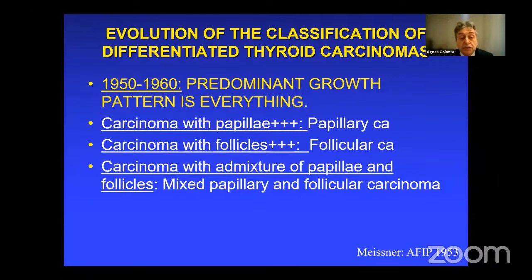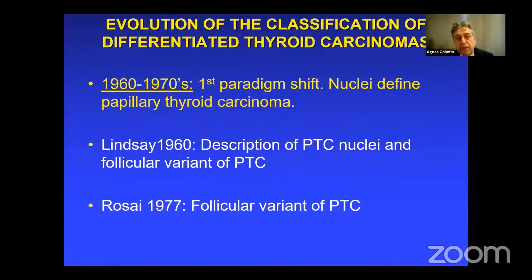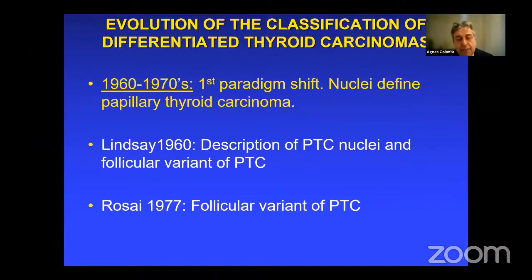A big change happened in the 1960s and 70s. A pathologist from California, Dr. Stuart Lindsay, in 1960 described the papillary carcinoma nuclei. He realized that nuclear characteristics — clearing, overlapping, irregular nuclear membrane — were found not only in papillary tumors, but also in tumors with a follicular growth pattern. He coined the term 'follicular variant of papillary carcinoma' in a monograph that is actually available online.